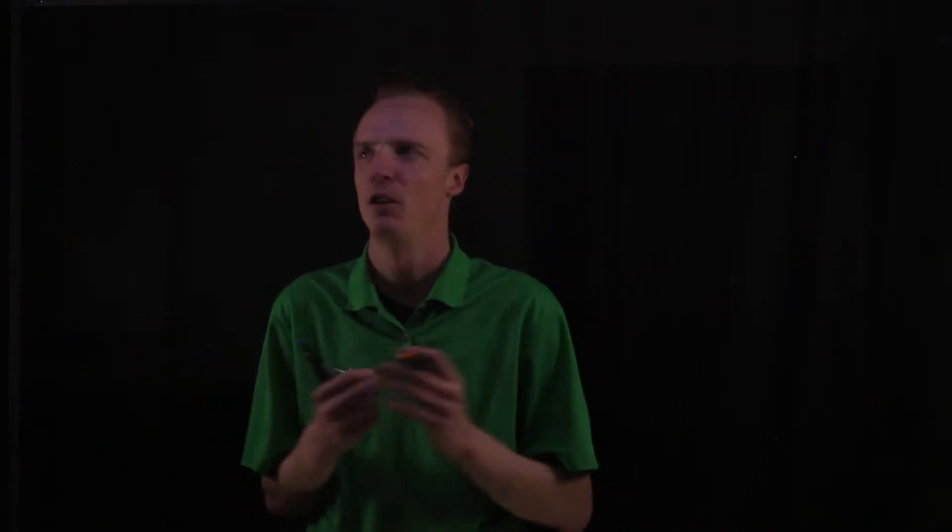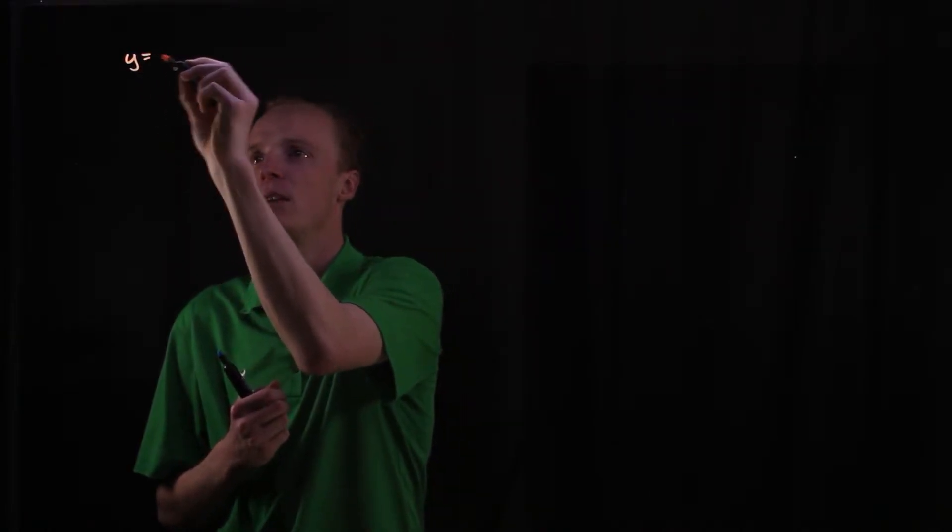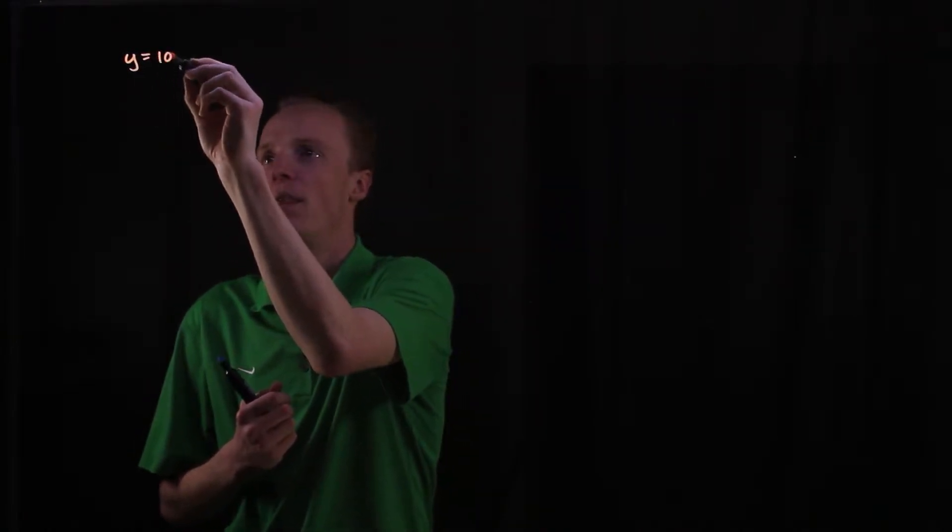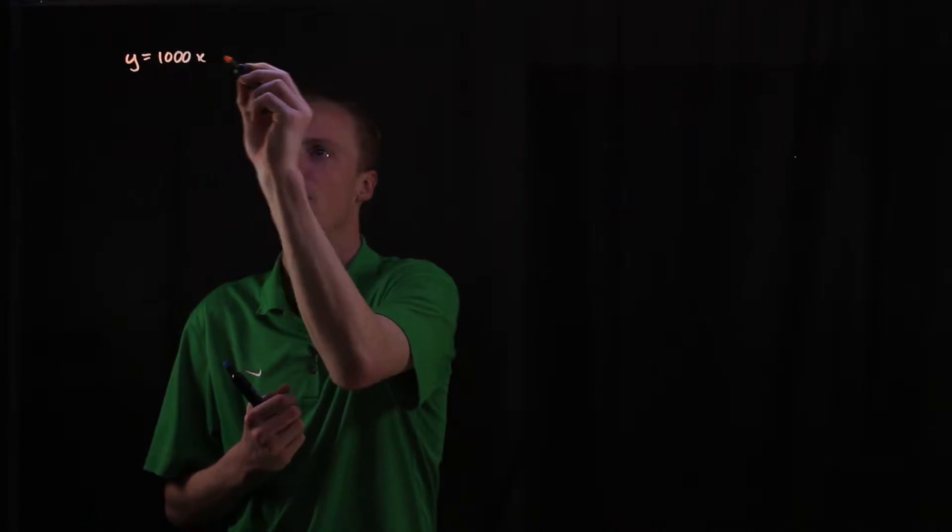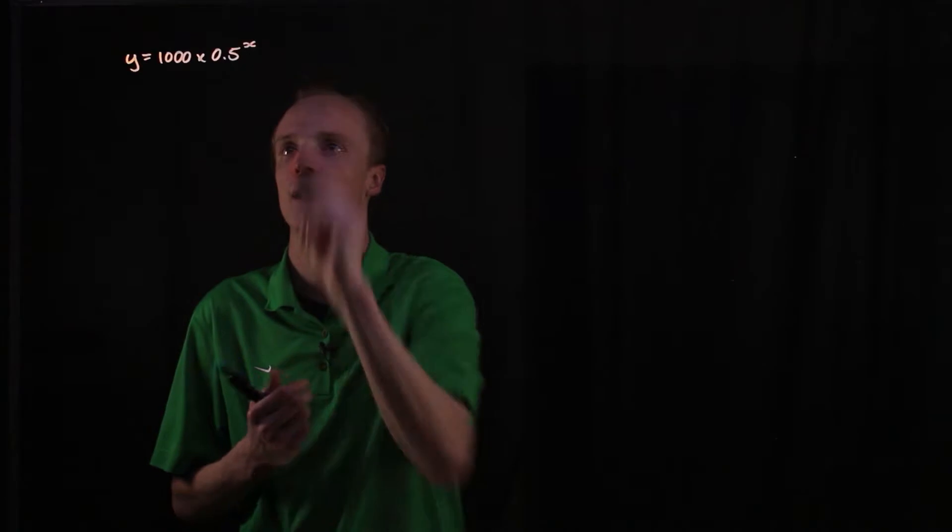So let's just take an example of one. We'll do a table of values and have a look at the graph. Let's just say we've got y is equal to 1000 multiplied by 0.5 to the power of x.